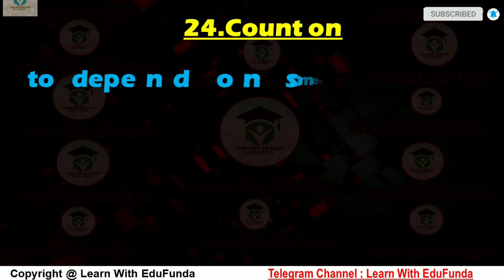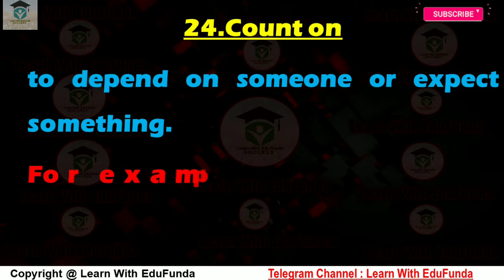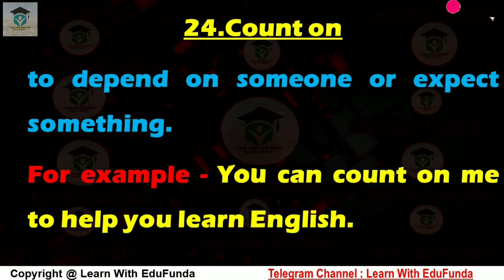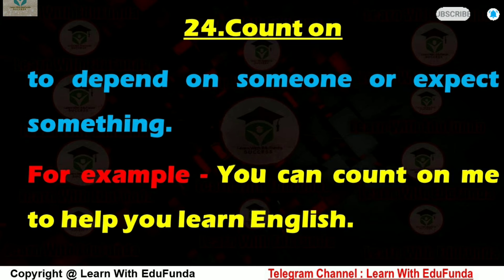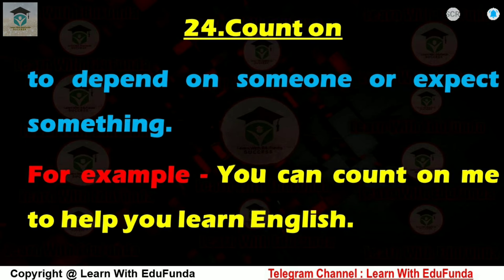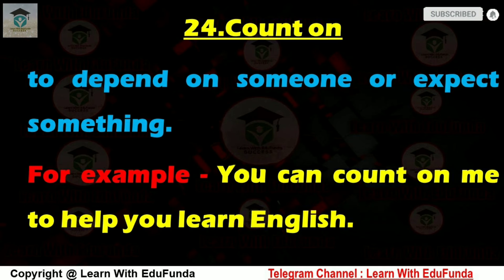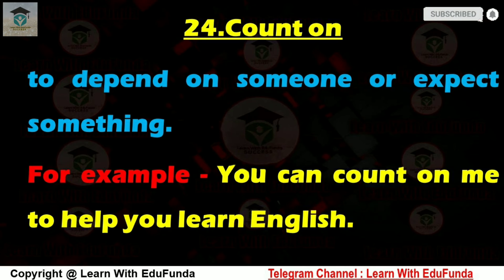The next one is 'count on'. किसी पर विश्वास करना या उस पर निर्भर रहना — it means to depend on someone or expect something from them. If you count on someone, you believe they will support or help you. Example: You can count on me to help you learn English. — आप English सीखने के लिए मुझ पर विश्वास कर सकते हो।